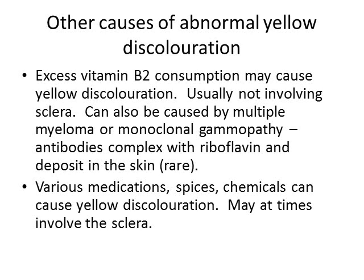Other causes of abnormal yellow discoloration: if you take in too much vitamin B2, that can also cause yellow — sometimes red — discoloration. It usually does not involve the sclera, because vitamin B2 is water-soluble. There are also some rare illnesses that can cause discoloration, such as multiple myeloma or monoclonal gammopathy, where antibodies produced in these diseases actually bind with vitamin B2 as if it were a pathogen, making a large complex. This complex is somewhat soluble in fat and can deposit in the skin, causing yellow discoloration. Many other chemicals, spices, and medications can also cause yellow discoloration, and the tricky thing is that sometimes these also involve the sclera.